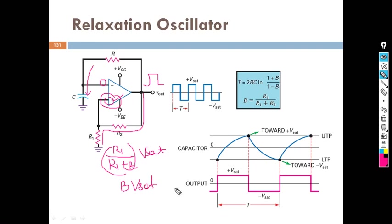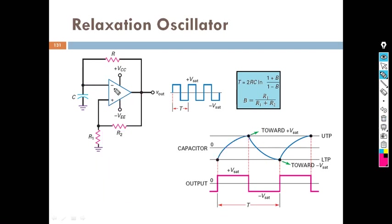So our capacitor will charge from zero until it reaches positive Vsat. When the voltage at the capacitor — that is, the voltage at the inverting terminal — becomes greater than B·Vsat, then the inverting input becomes greater than the non-inverting input.